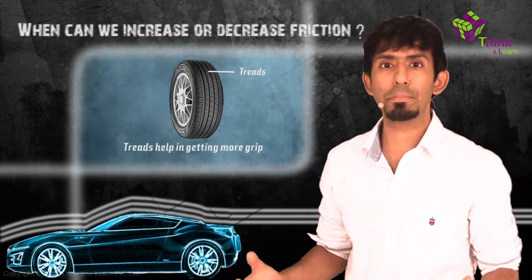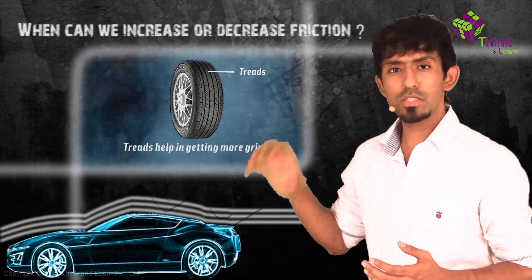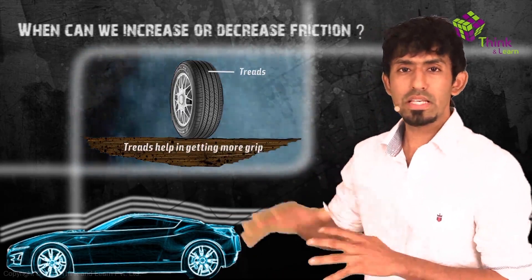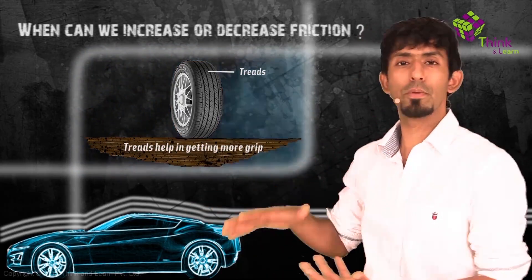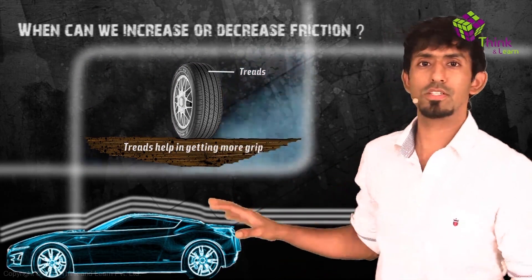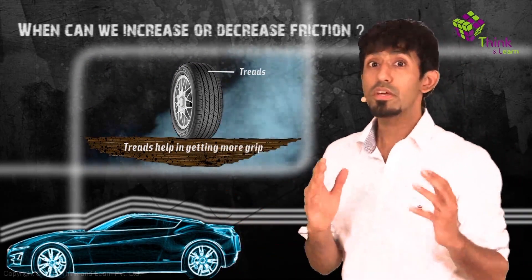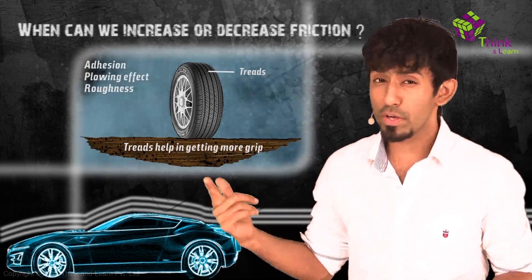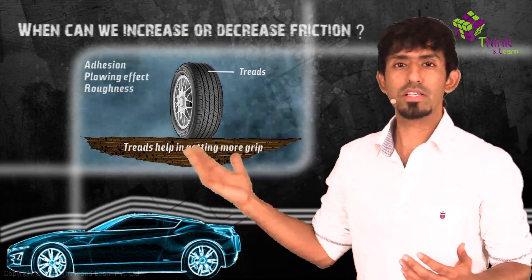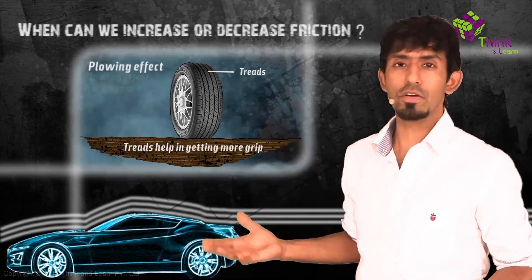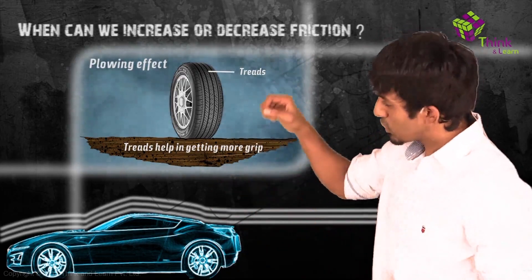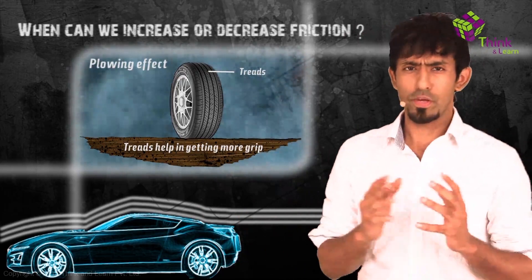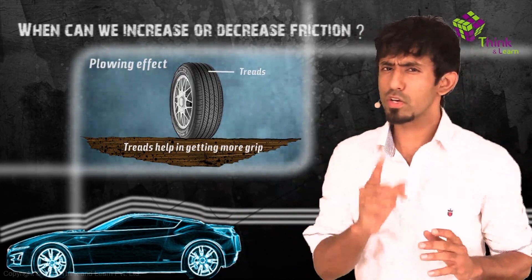If you're going on a surface that is soft, those treads tend to give you a lot more grip because they sink into that surface. Of our first three causes — adhesion, flowing effect, and roughness — this is the flowing effect: because the surface is very soft, when you push into it, you get a lot more friction.